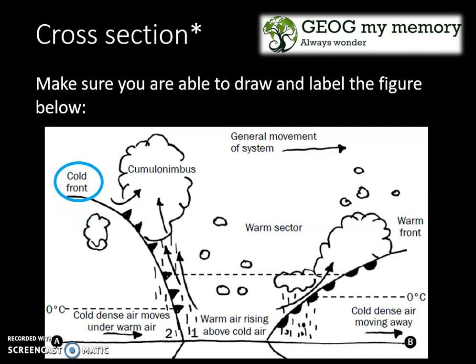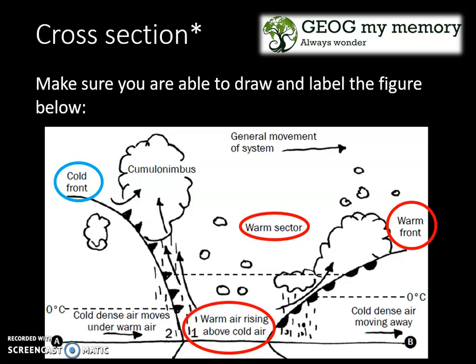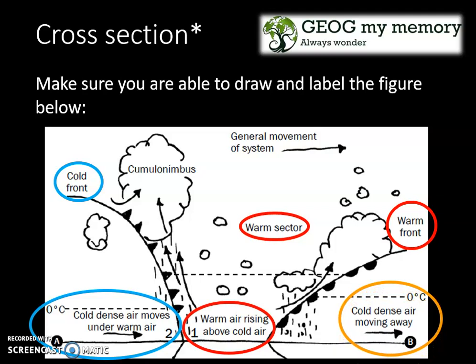In this diagram we can see the cold front and the warm front. Between them is your warm sector. Your warm air rises above your cold air, as shown at point one. At point two, your cold dense air moves under the warm air, and your cold dense air moves away at point B. The general movement of the system is from west to east.